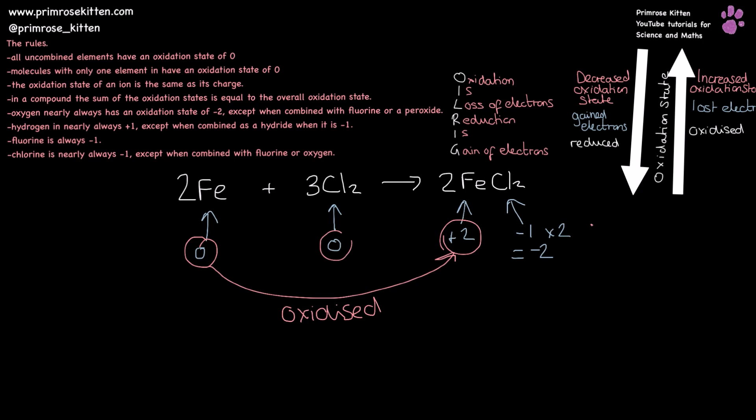Chlorine has gone from zero to minus one, it has decreased its oxidation state, it has gained electrons, it has been reduced.